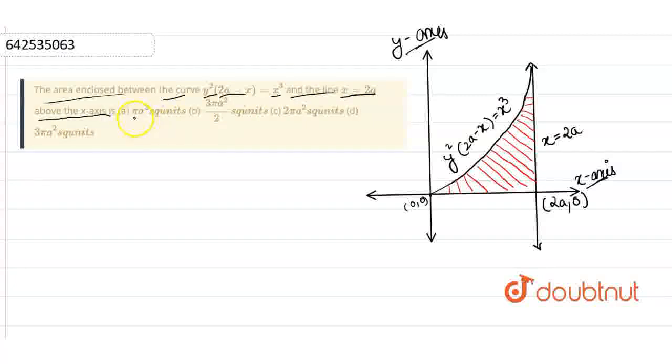This is the four options: πa² square units, 3πa²/2 square units, 2πa² square units, and 3πa² square units, right?